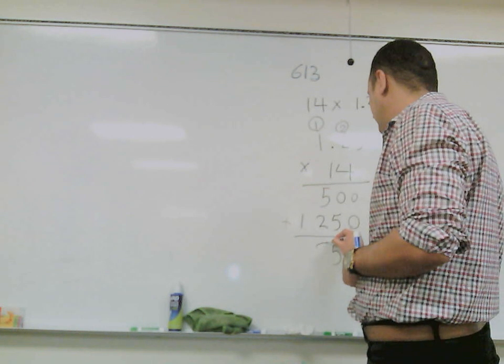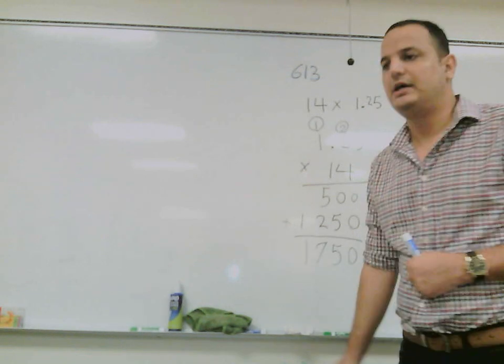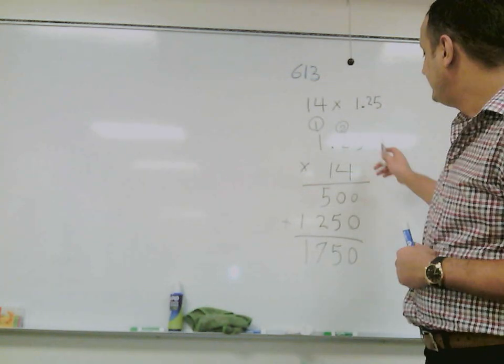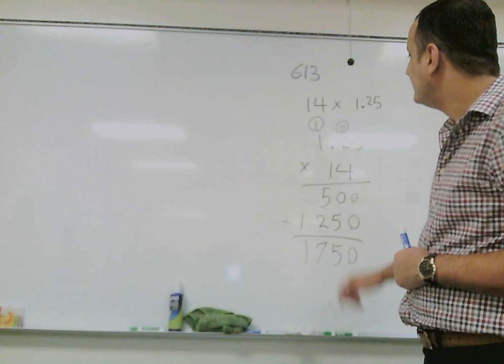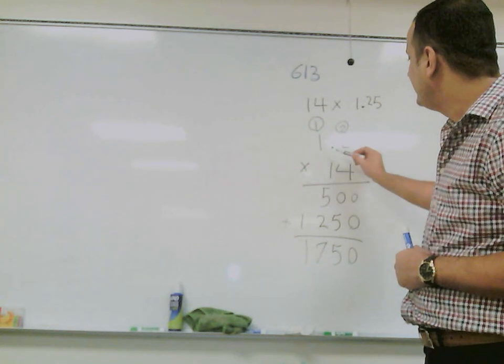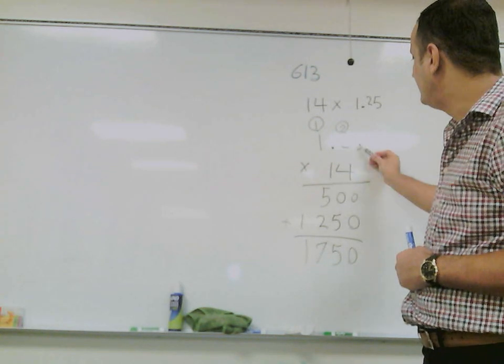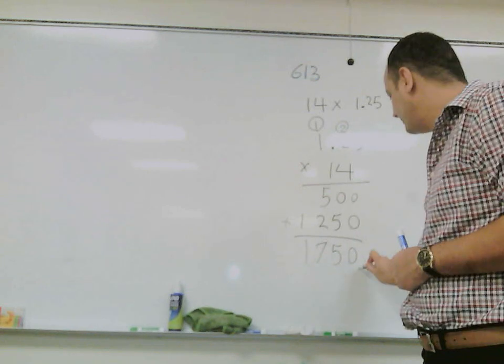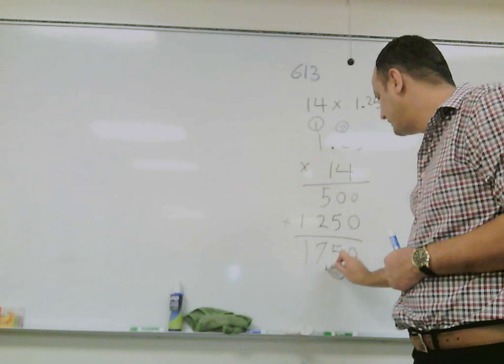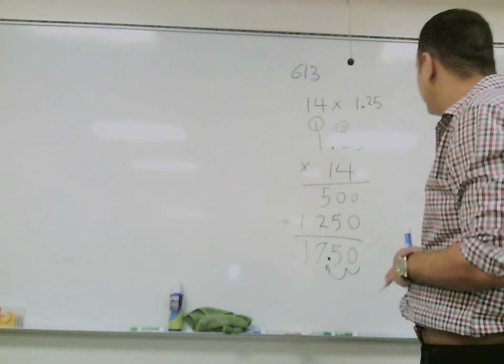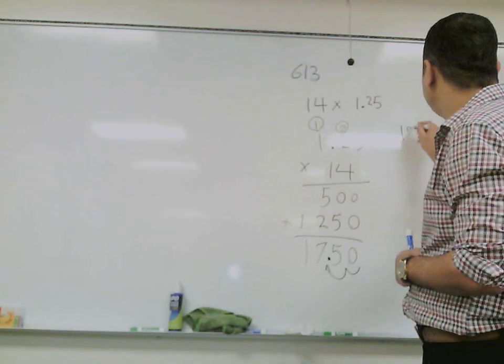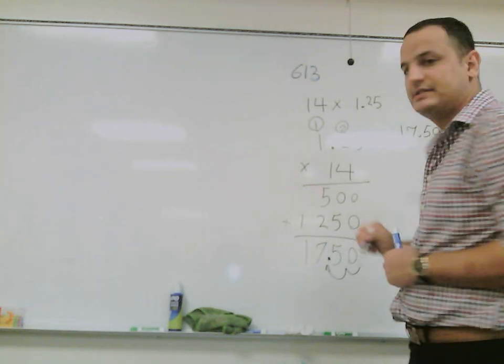Are we done? Not quite. We still have to put our decimal. How many numbers do we have after this decimal point? 1, 2. So I go back 1, 2, and I put my decimal here. So the school made $17.50 for selling the pretzels on Monday.